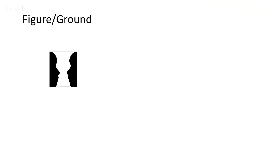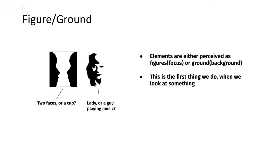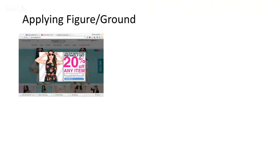This first one is called Figure Ground. As you can see from this picture, can anyone tell me what they see? So you can interpret it in two different ways — some see two faces, some see a cup. This is because you're focusing on one color and then the other color becomes the background. Whatever you're focusing on, we call it a figure, and whatever you're not focusing on is the ground. In another example, you might see a lady or a guy playing music. This is very instinctive to us — it happens immediately in our perception. How do we apply Figure Ground in web or mobile applications?